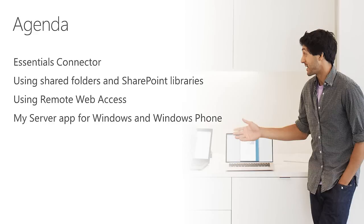Starting with a quick look at the agenda: we'll begin by talking about the Essentials Connector, a new program that's a starting point for some familiar tools from previous versions. We'll also look at using shared folders and SharePoint libraries, which is a new aspect of the optional Office 365 integration. Then we'll look at remote web access, the web portal we've had in previous versions, and what's new there. Finally, we'll look at the My Server app for Windows Client and Windows Phone.